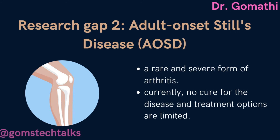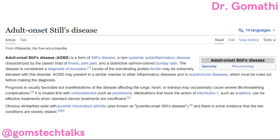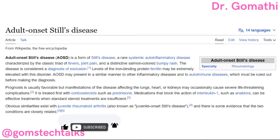The next research gap I have identified is Adult Onset Still's Disease, that is AOSD. This is a rare type of inflammatory arthritis that usually begins in adulthood, characterized by spiking fever, rash, sore throat, joint pain and swelling. AOSD is an autoimmune disease in which the body's immune system mistakenly attacks healthy tissues and cells, leading to inflammation in various parts of the body. The cause of AOSD is unknown and there is no known cure, but treatment can help manage symptoms and prevent complications.